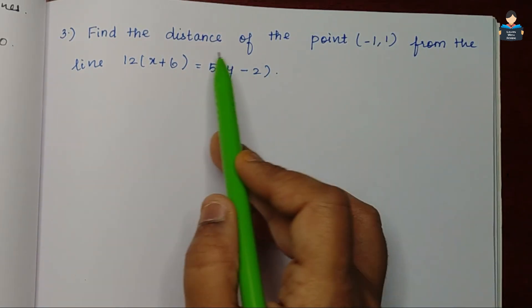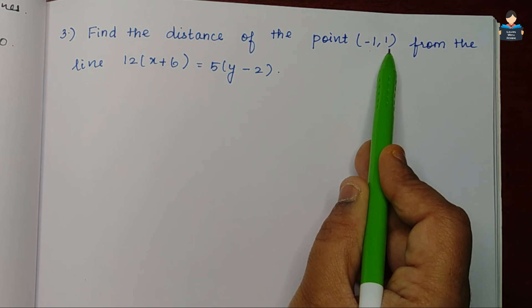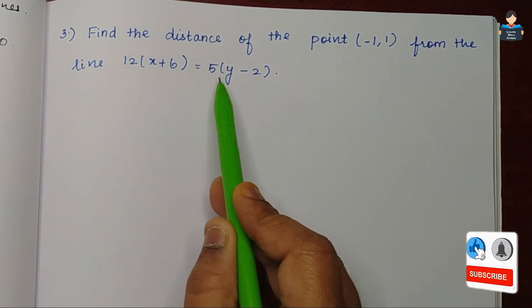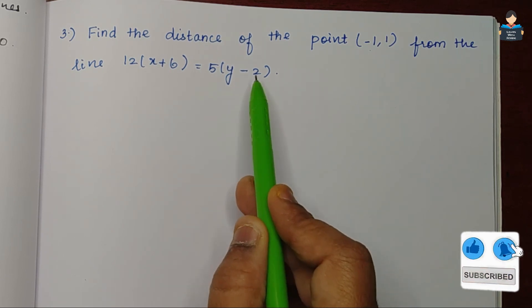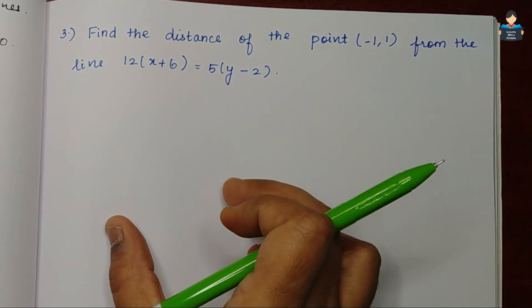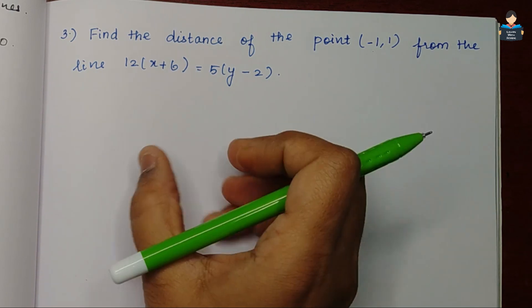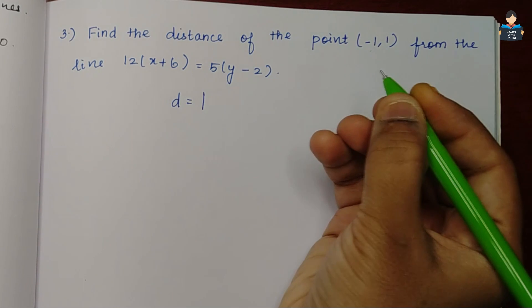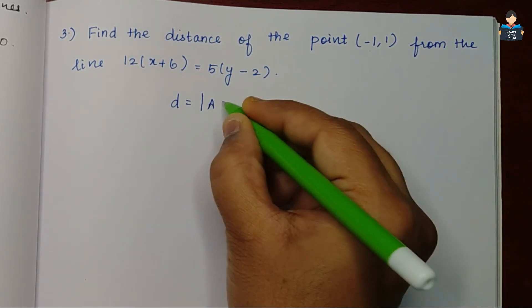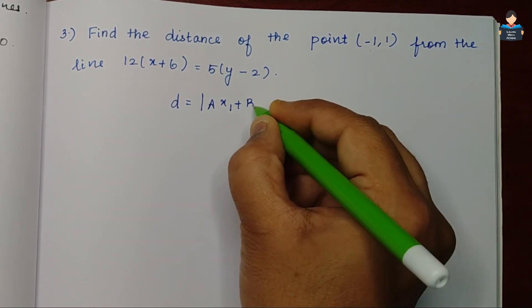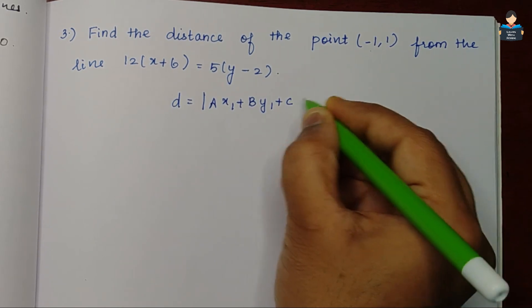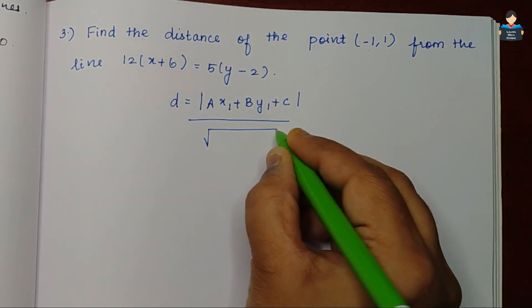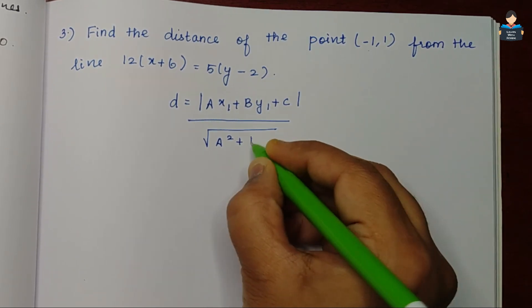So, find the distance of the point minus 1, 1 from the line 12 into x plus 6 is equal to 5 into y minus 2. So, distance of the line from the point-ஐ என்ன formula apply பண்ணினா, d is equal to modulus of ax1 plus by1 plus c, by square root of a square plus b square.